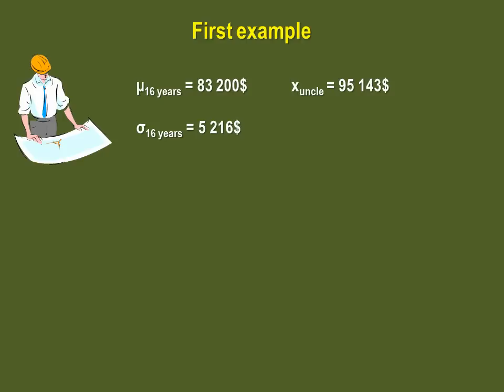One of your uncles, an engineer with 16 years of experience, earns a salary of $95,143. The question is, is his salary abnormally high?